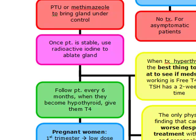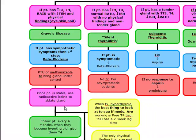Once we give them beta blockers and PTU or methimazole and the patient is stable, we then radioactively ablate the gland with radioactive iodine. You have to remember, we can only give radioactive iodine once the patient is stable. If we give radioactive iodine to a symptomatic patient, it's actually going to worsen the Graves' disease and worsen the symptoms. So radioactive iodine in the symptomatic patient is contraindicated. The patient must be stable and asymptomatic to receive radioactive iodine.